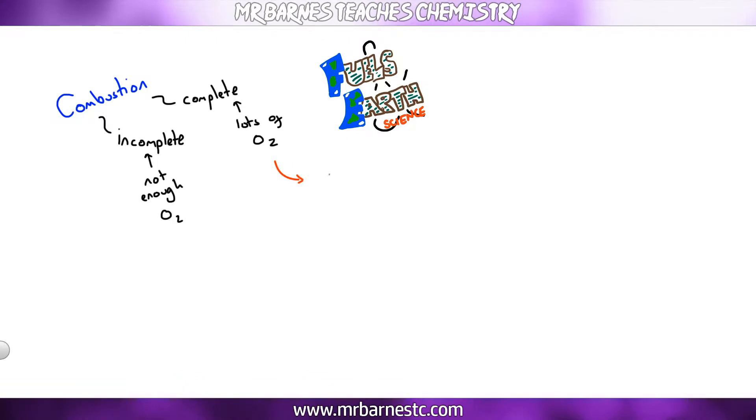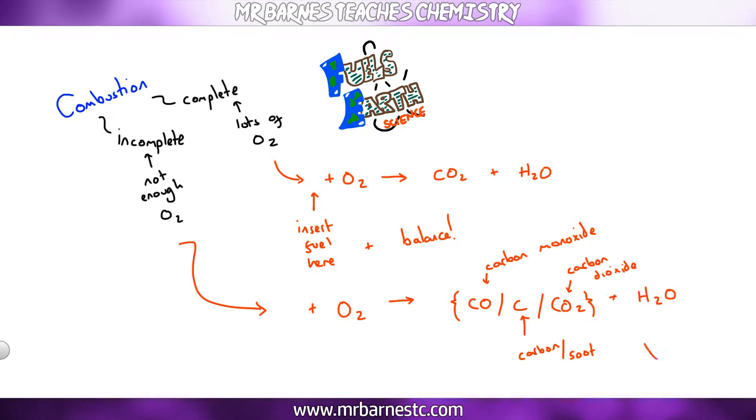If you have complete combustion, your fuel reacts with oxygen to make carbon dioxide and water vapour. If you have incomplete combustion, similar thing happens, it reacts with oxygen, but because there's not enough oxygen you get different things. You get carbon monoxide CO, you get carbon or soot which is C. You can still get carbon dioxide and you always get water H2O. Now you'll usually be told this in an exam question, but they might ask what is produced by incomplete combustion. So carbon monoxide and soot are the key things.